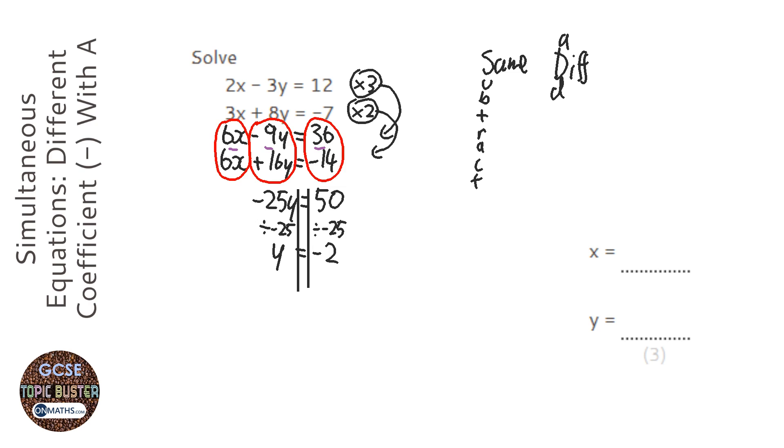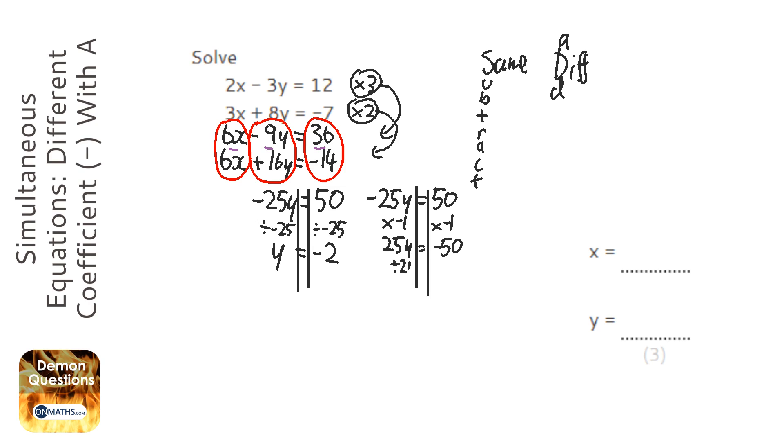Now if you're not comfortable with doing that, you can switch the signs first. So if you end up with this problem, what you can do is you can just effectively times both sides by minus 1 first. So you've got 25y equals minus 50, and then just divide by 25. So y equals minus 2.